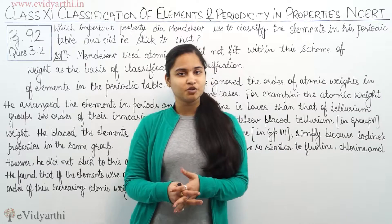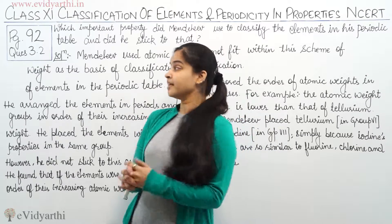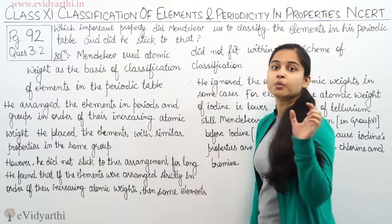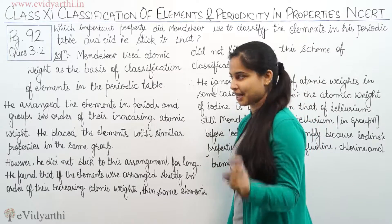The important property which Mendeleev used to classify the elements in the periodic table was atomic weight. So Mendeleev used atomic weight as the basis of classification of elements in the periodic table.